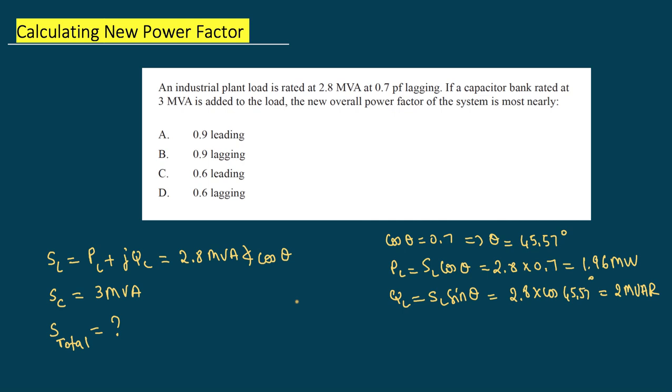So the system total is equal to, let me use a different color just to switch it up, this is equal to the S_load plus the cap S. But we know that this is going to be a reactive power because that's what the cap is going to be contributing. So this is going to be equal to, your P is 1.96 for the S_L plus j2, and because it's capacitive load, it's going to be negative j3.